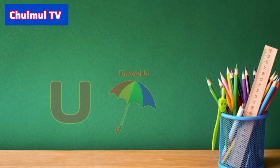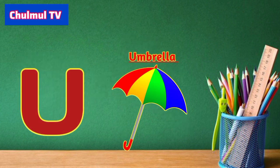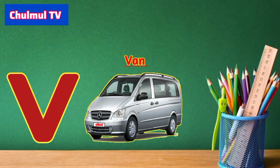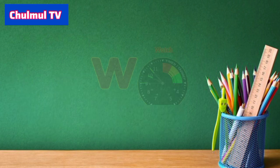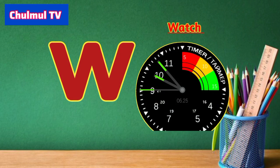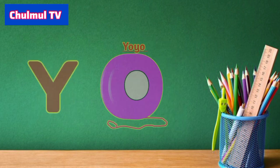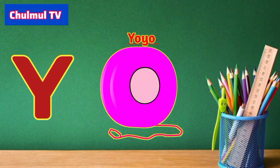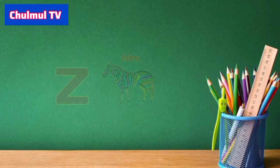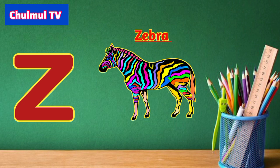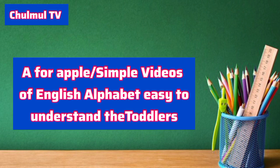U for umbrella, V for van, W for watch, X for x-ray, Y for yo-yo, Z for zebra. All videos of English alphabet.